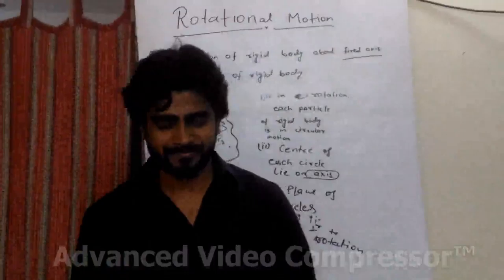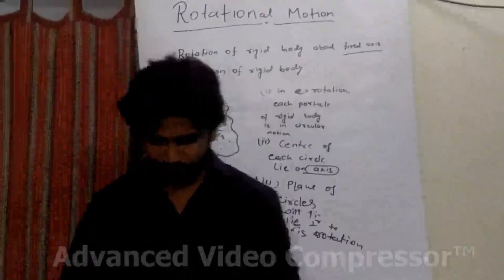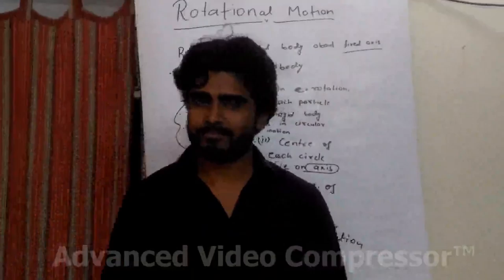These three conditions indicate that the body is rotating about this axis. This is a sufficient condition: each particle of the body is in circular motion, the center of each circle lies on the axis, and the plane of circles lies perpendicular to the axis of rotation. Let's see what the fixed axis is — it is a very important concept in rotational motion. I will give you a demonstration so you understand what the fixed axis is.